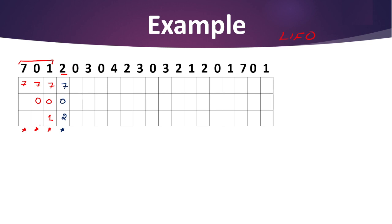Next we have value 0. As you can see, value 0 is already available in the frames, so there is no need to replace anything — no page fault here. Next is 3. The value 3 is not available anywhere, so we need to replace one value.